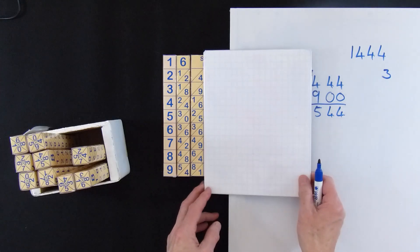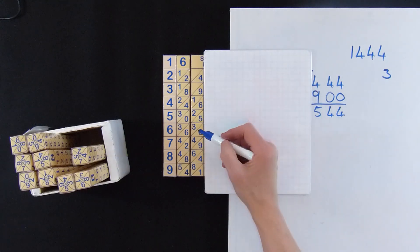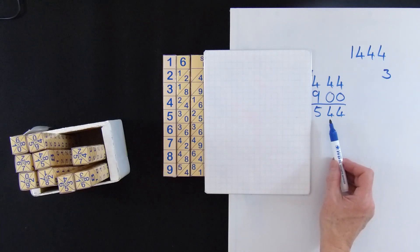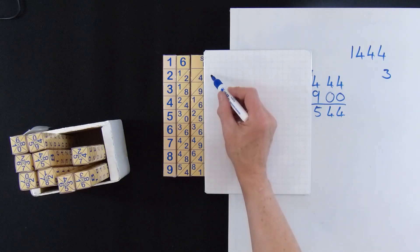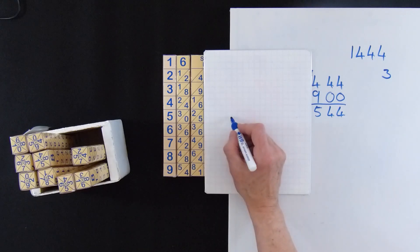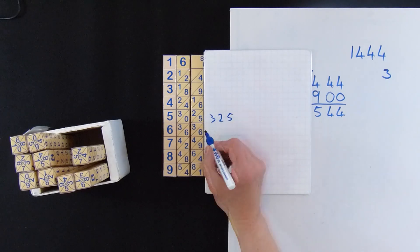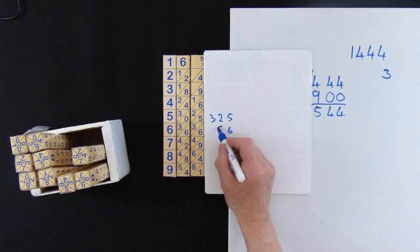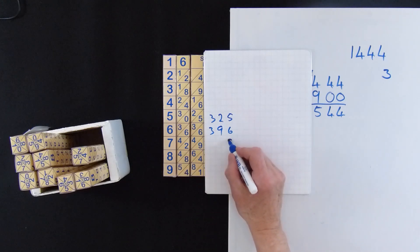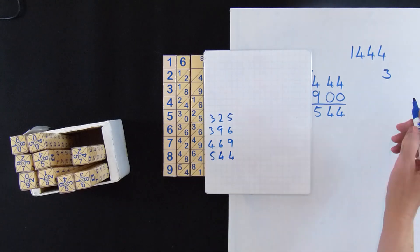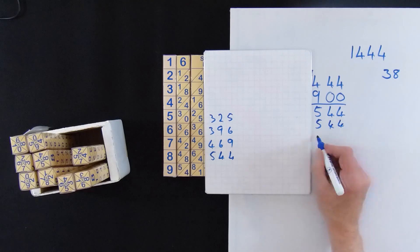So now ignore the rest of the columns and look down there, and see the biggest number that's less than 544. So we're looking down there, you can see the squares listed. You'll see that 544 gives us 8, so our answer is 8. If we take off the 544, we get 0. So that means that the square root of 1444 is 38.